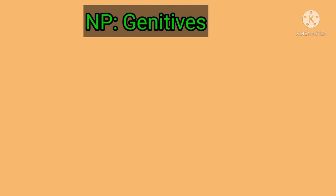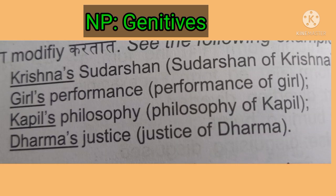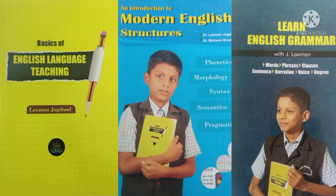Genitives: nouns showing possession are called genitives. Genitives are generally formed by writing apostrophe-s after a noun and work like possessives. When used before another noun, they function like an adjective. Examples: 'Krishna's Sudarshan' means Sudarshan of Krishna; 'girl's performance' means performance of a girl; 'Kapil's philosophy' means philosophy of Kapil; 'Dharma's justice' means justice of Dharma. The underlined genitive cases modify the noun occurring after them. That covers the pre-modification part of a noun phrase.